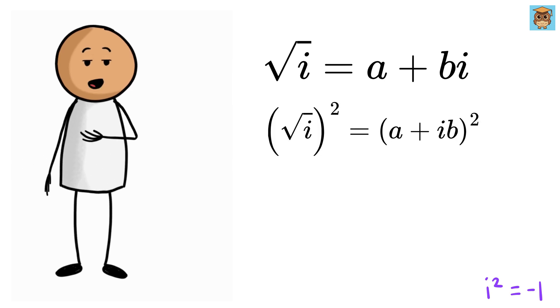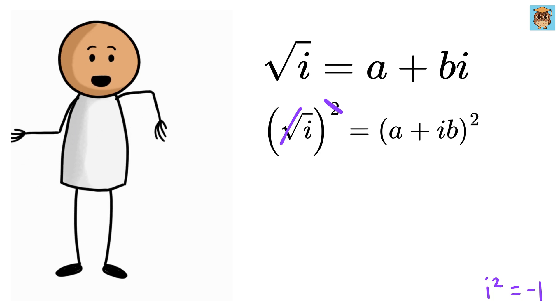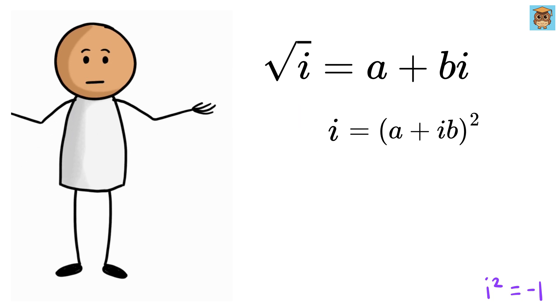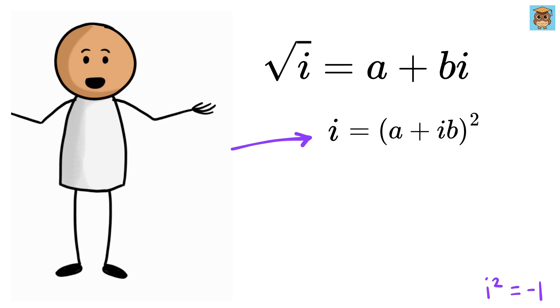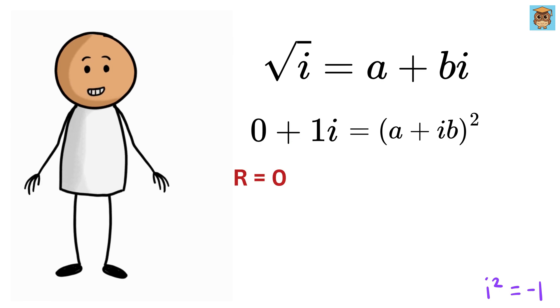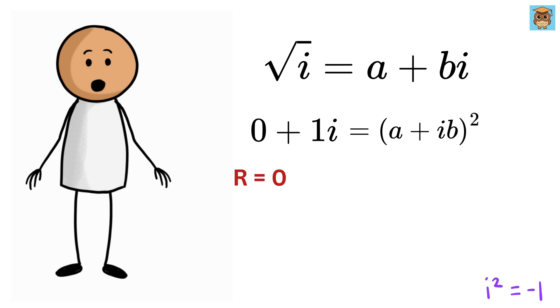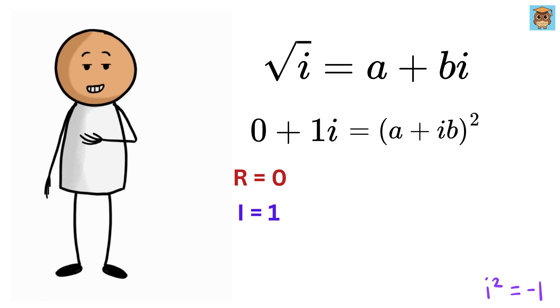In order to do that, we will square on both sides so that we can remove the square root sign from i. So we have i equals (a + bi)². We can also write this i as 0 + 1i, such that here we have the real part as 0 and imaginary part as 1.